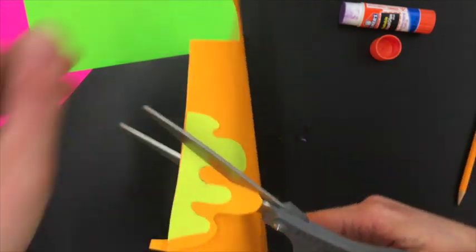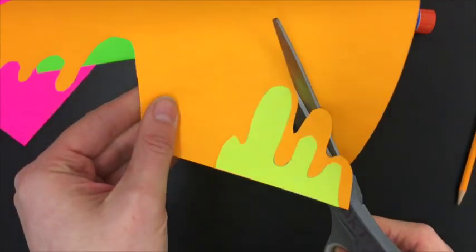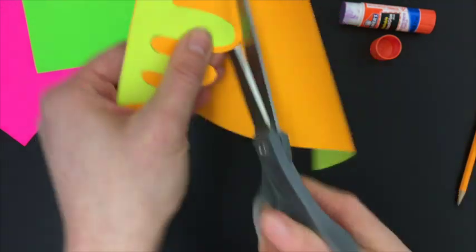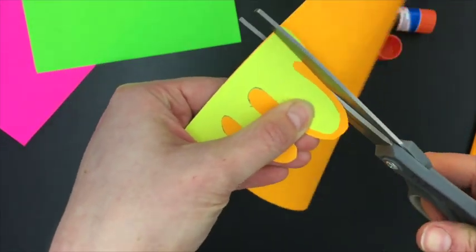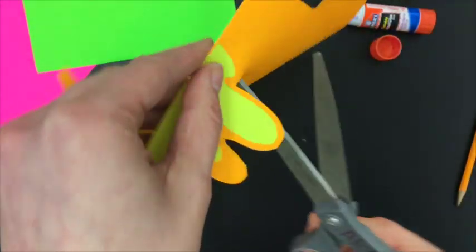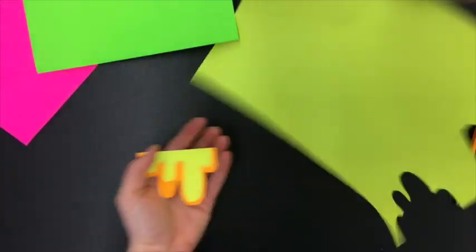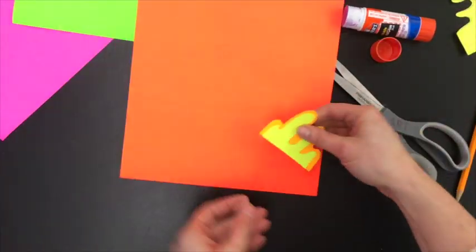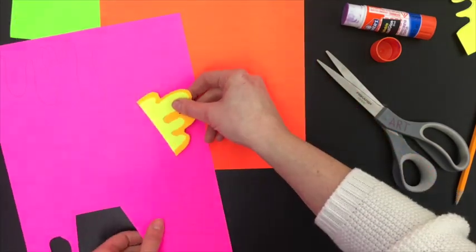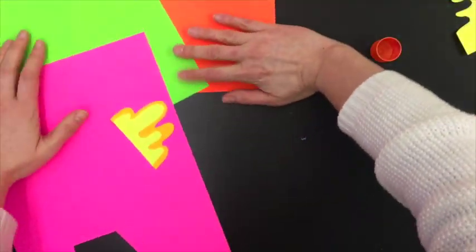You're gonna repeat this over and over again cutting out that wavy line until you have a paper sculpture that includes at least five pieces of paper. Of course you can add more, but you need at least five before you start a new one. I'm gonna keep going selecting colors of paper as I go to make a color scheme.